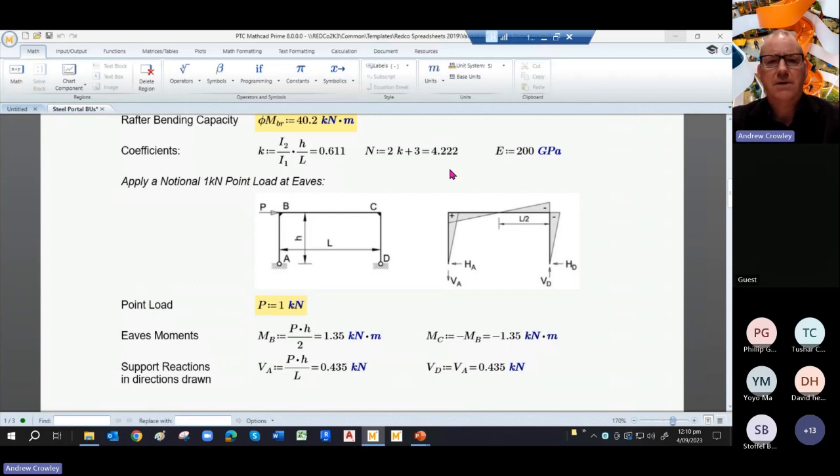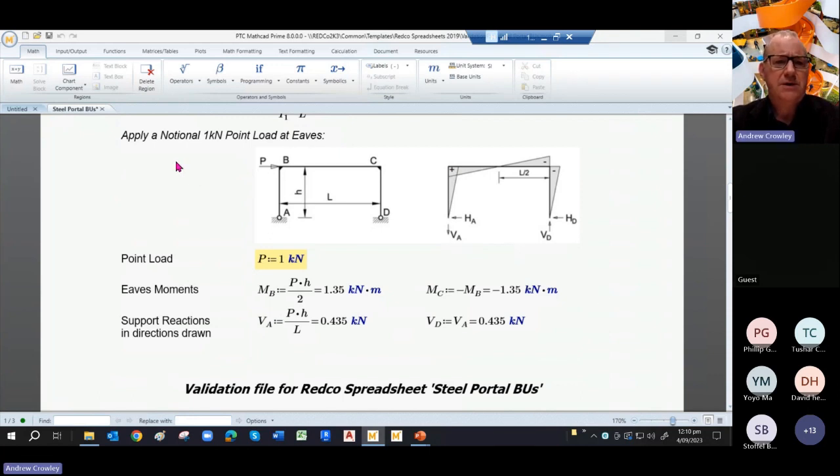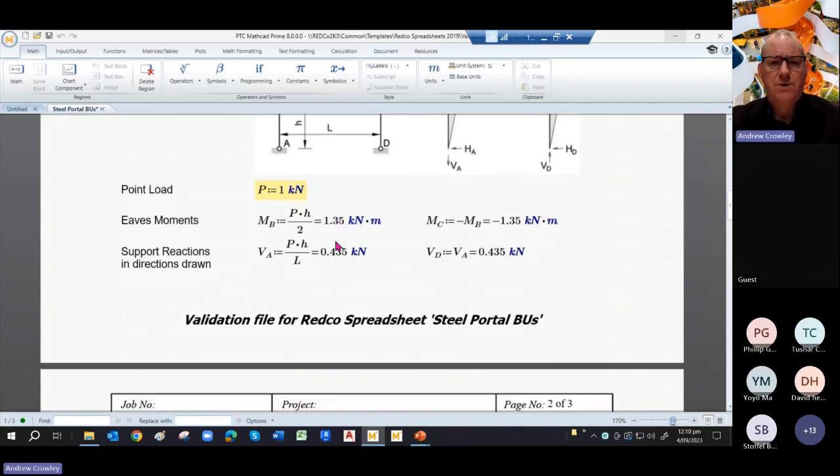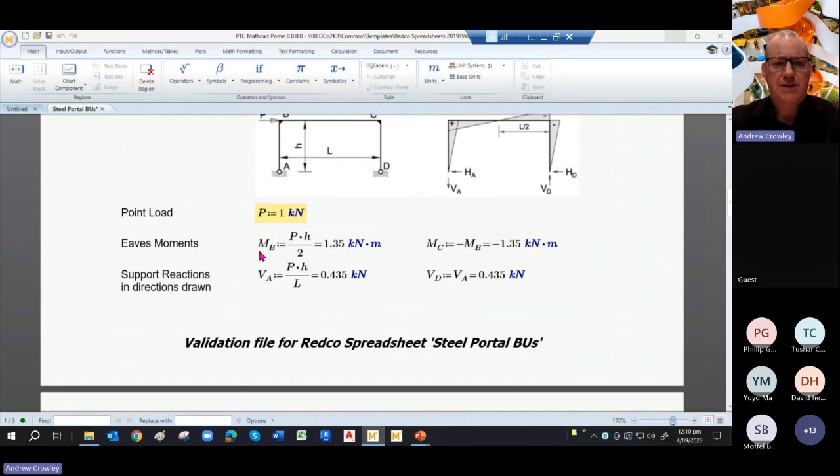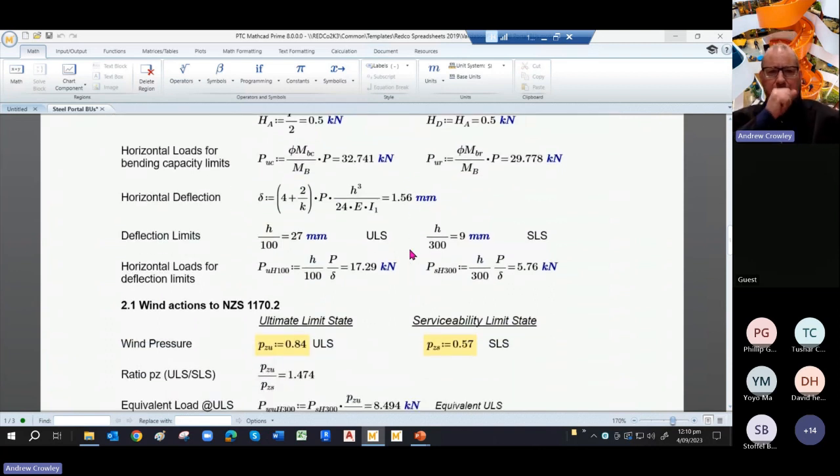So I'm scrolling down. These coefficients come from Klein-Logel tables. So we start with a notional 1 kilonewton point load at eaves and apply that. Given that 1 kilonewton point load, you derive an eaves moment MB and a support reaction. So oddly enough, both these moments are the same but handed, as you can tell from the bending moment diagram. So going down there, the horizontal load limit based on the bending capacity is then derived by factoring up the capacity versus the notional load. And we get a load of 32 kilonewtons based on the capacity of the rafter, 29 kilonewtons.